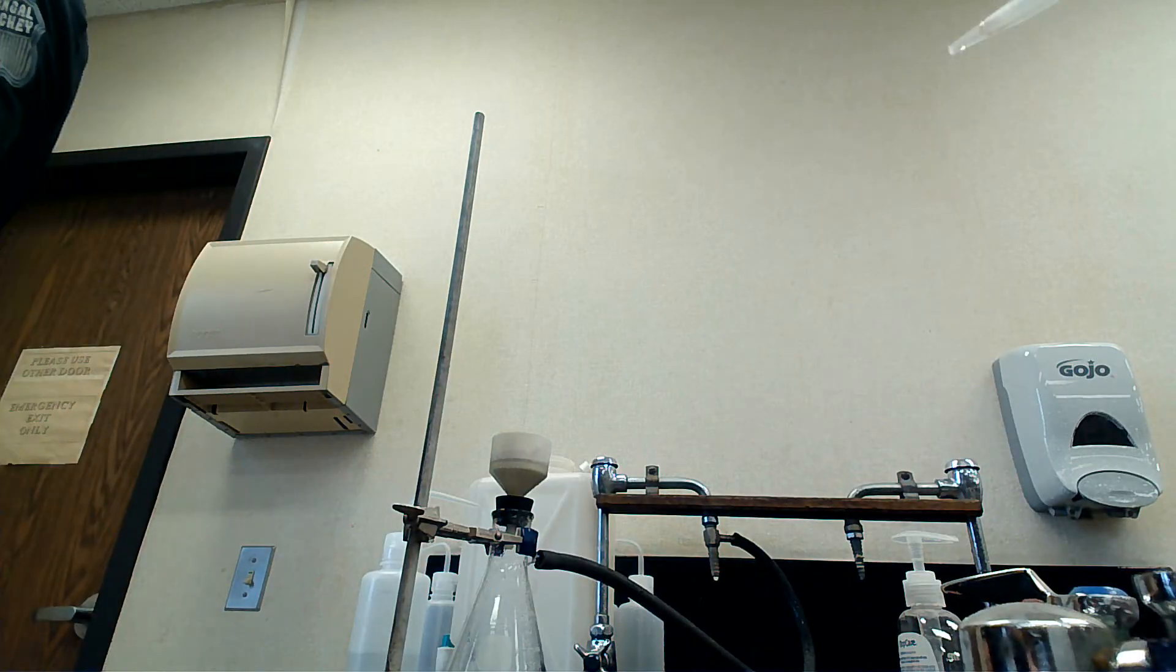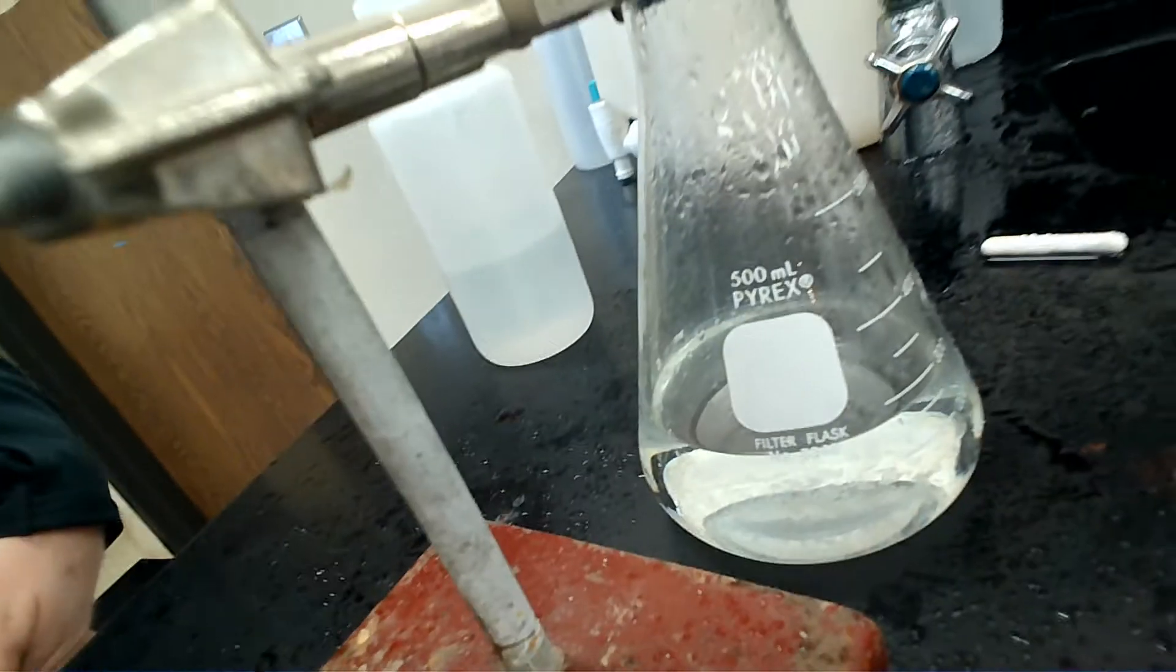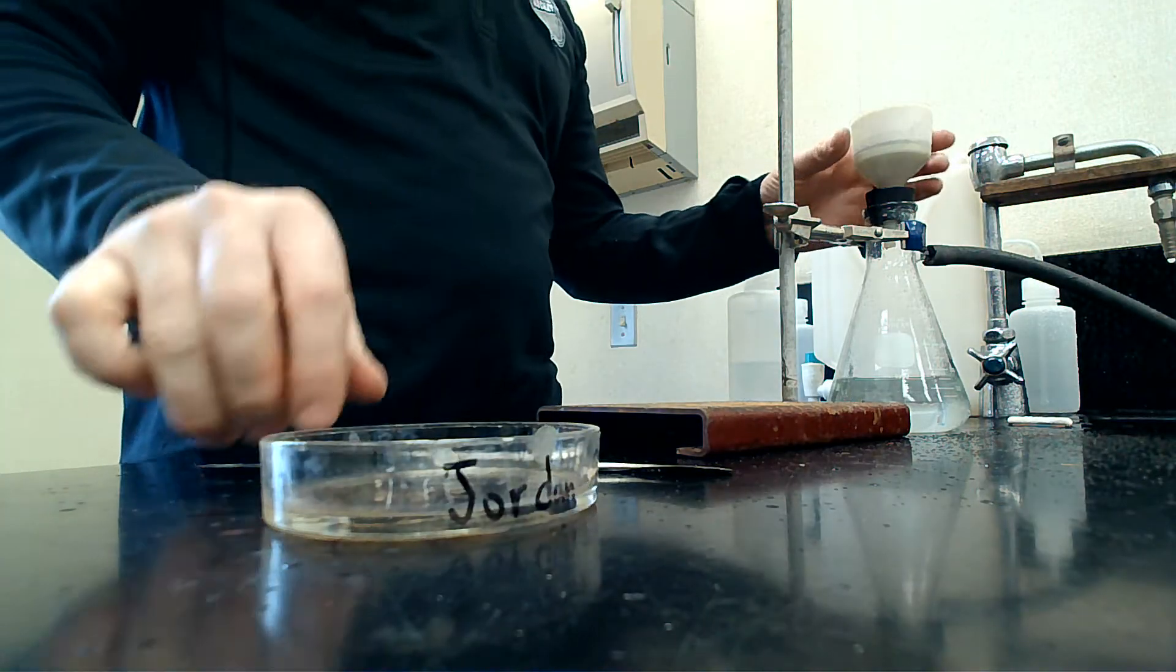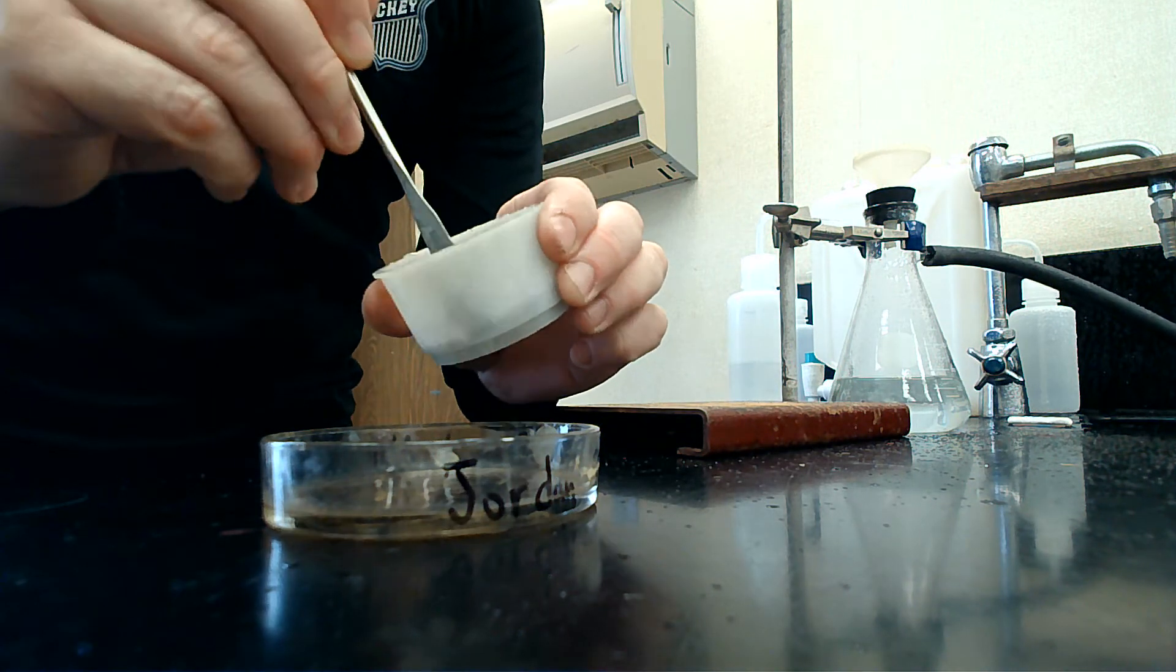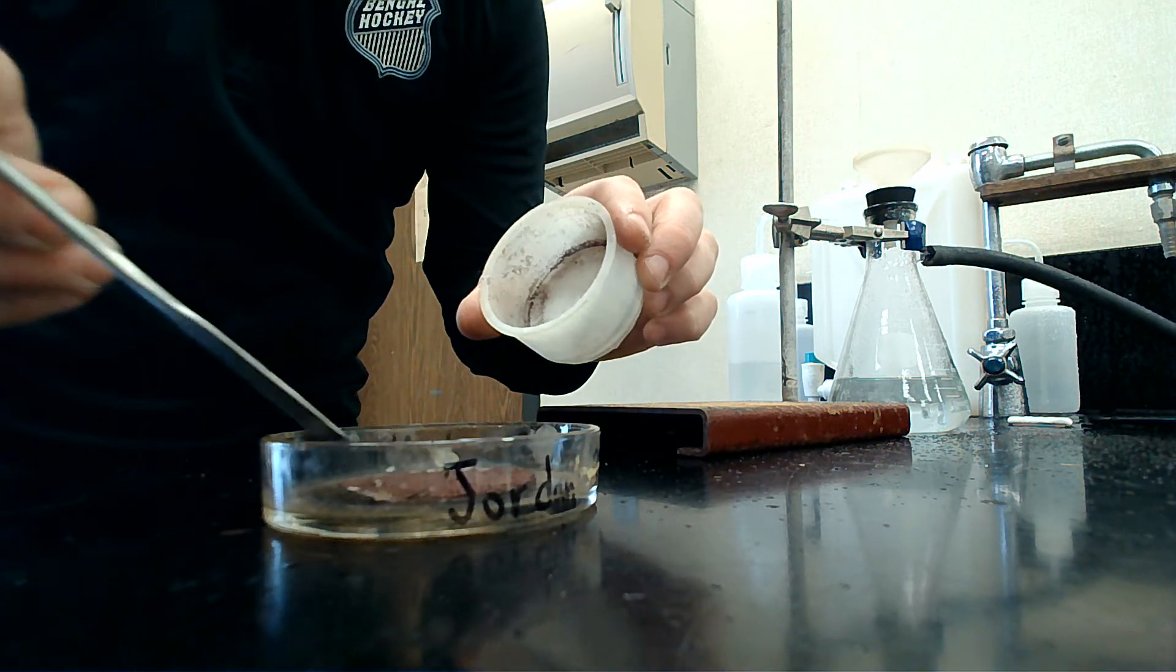We separated the solid. You can see the clear zinc chloride solution on the bottom and the copper up top. Now we're going to put our copper into a petri dish and dry it out to get a mass of it.